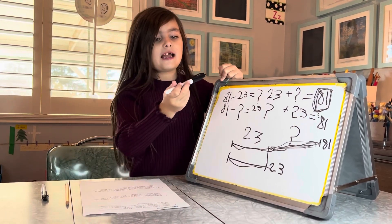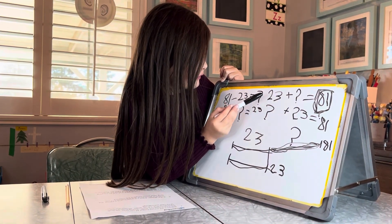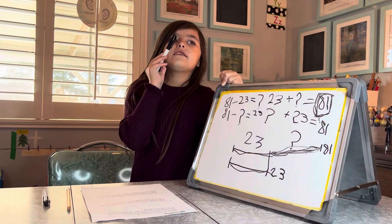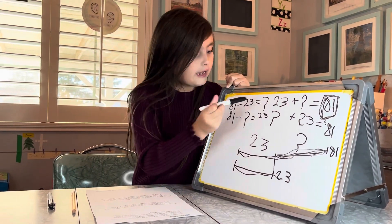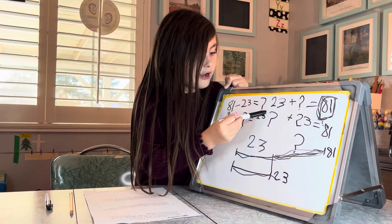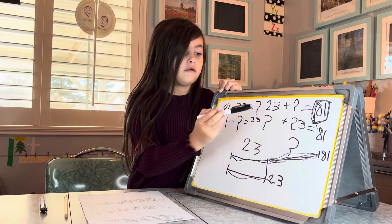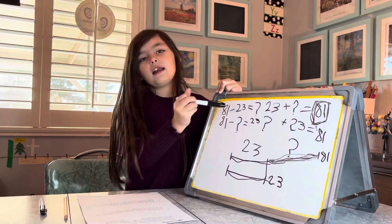Let's look at the top one. 81 takeaway 23 equals the question mark. This is the one because you know why? If the equal sign equals this, the question mark, that means that this one is the answer.